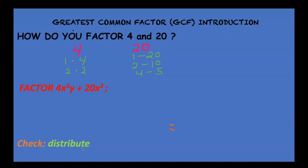20 is 1 times 20. Now that little dash is not a minus sign, that's just a lazy multiplication sign. 2 times 10 and 4 times 5. So when you look at the factors that are in common, there's of course 1 and 2 and 4. But 4 is the greatest common factor. Now all these other ones here in 20 are true, but they're not in common with 4.